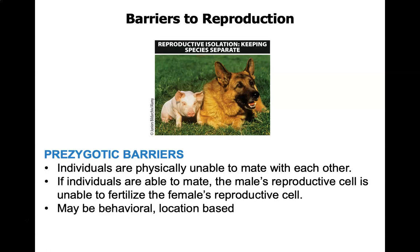A prezygotic barrier can also be behavioral or location-based. For example, if you have a mountain range in between and two populations physically cannot ever encounter one another, this could be a prezygotic barrier. Another way to have a prezygotic barrier is if individuals are physically able to mate, but the sperm cannot actually fertilize the egg and produce a viable egg. Both being physically unable to mate and being unable to produce a zygote are considered ways to limit reproduction.